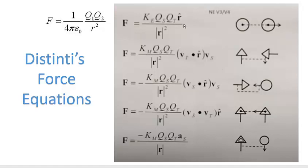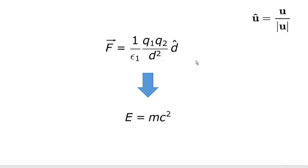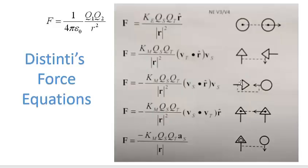You'll see the unit vector here — this is an R with a little hat. When R has a little hat, it is a unit vector. What I want to do is show you how to get from a force equation to an energy equation, because in my previous video I showed you the logic to go from Coulomb's Law to E equals mc squared. Because Robert Distinti uses the unit vector, I thought it was important to run through the logic of how to properly convert from a force equation to an energy equation.